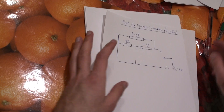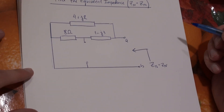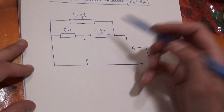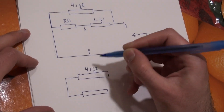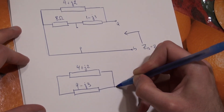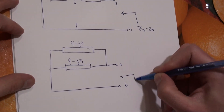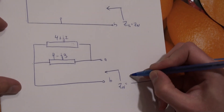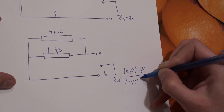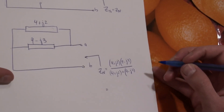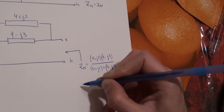The Norton impedance equals the Thevenin impedance. With no current source, the two bottom elements are in series and combine: their real parts add to give (9 minus J3). This combines in parallel with (4 plus J2) using the product-over-sum rule. The result is Z Norton equals 3.176 plus J0.7059.